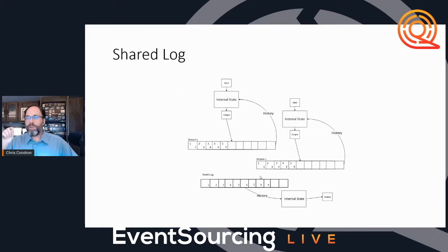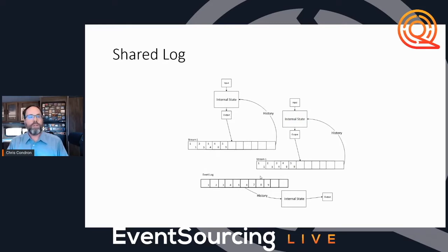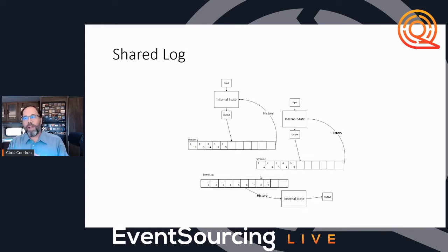If I have two aggregates on a shared log, then I can use the log to manage the invariants between them using the write-ahead pattern. That write-ahead pattern between those two aggregates allows me to use the common event log they share. For example, if I'm doing a balance transfer and both accounts are in the same shared log, I can write 'reserve amount' into the log — decrementing the balance from the first one — then write 'apply transfer' into the second one, and then go back to the first one and write 'confirm'.